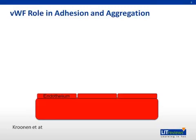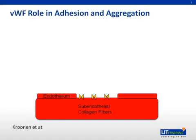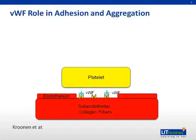Here we have a blood vessel with endothelial cells along its lining. These endothelial cells are damaged, exposing subendothelial collagen fibers. Once these collagen fibers are exposed, von Willebrand factor in the serum binds to these collagen fibers. Once this factor is bound, it then binds to platelets through the GP1B, or glycoprotein 1B, receptor.